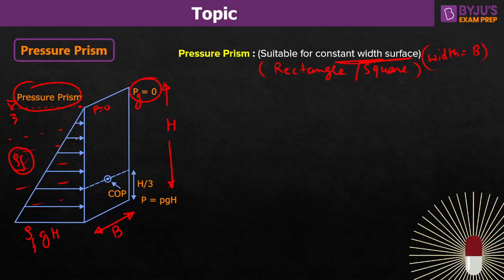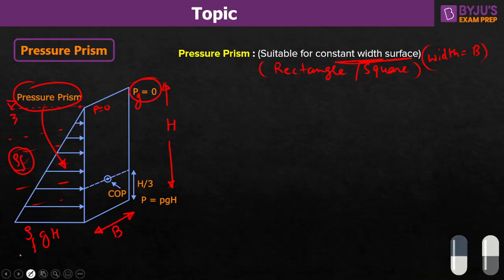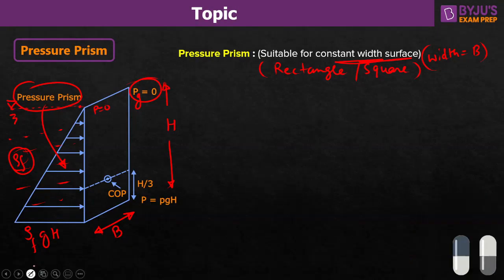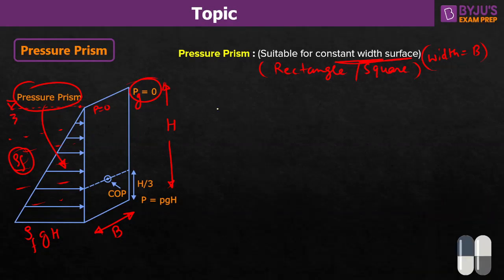The pressure force is always normal and compressive. This is called the pressure diagram. We can find out the hydrostatic force acting on this vertical plate by using the pressure prism.